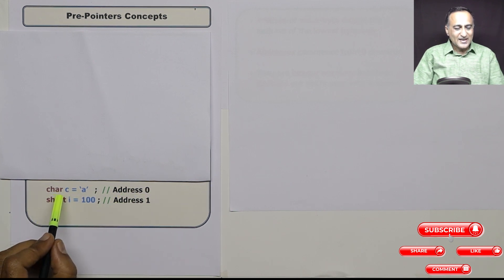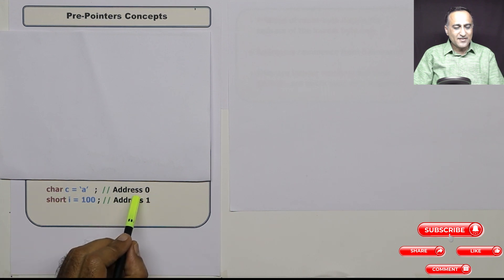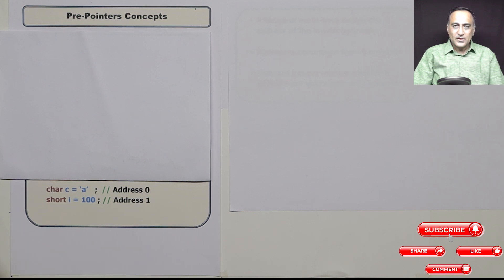So let us say character c is stored at address zero and short int i is stored at address one. Now there are a few things in memory which determine how these two items are going to be stored.